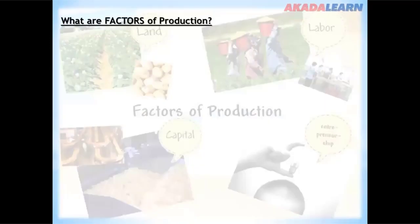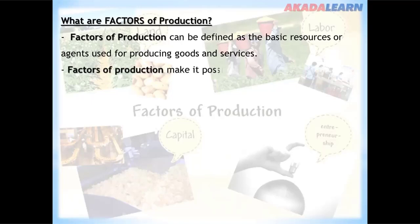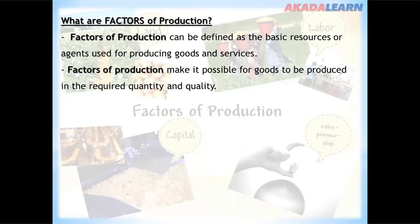What are factors of production? Factors of production can be defined as the basic resources or agents used for producing goods and services. Factors of production make it possible for goods to be produced in their required quantity and quality.